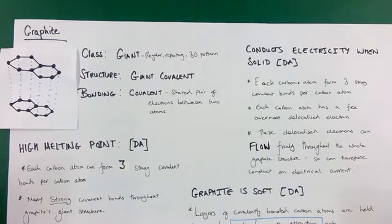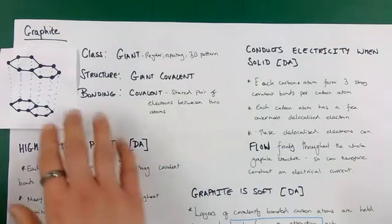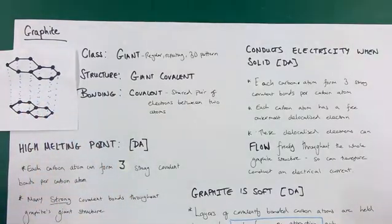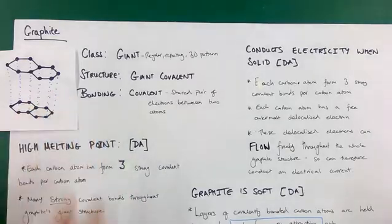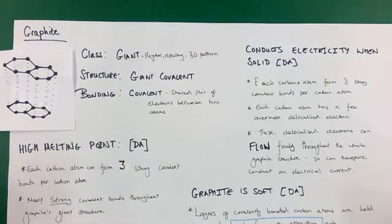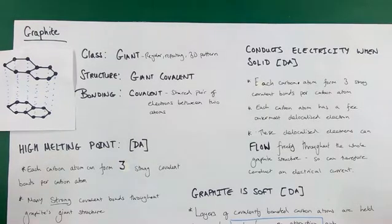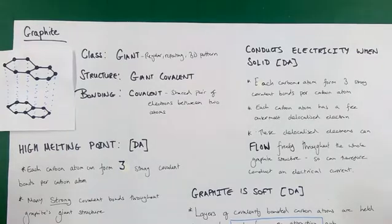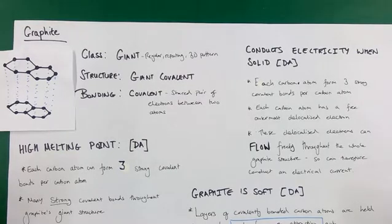These points will be expanded upon later. First, I'm going to give you an introduction focusing on the general aspects of the structure itself. What kind of structure is it? It would be classified as a giant structure, meaning it has a regular repeating 3D pattern. The structure is a giant covalent structure, which tells us about its bonding. The bonding present is covalent bonding, meaning there are shared pairs of electrons between the atoms.